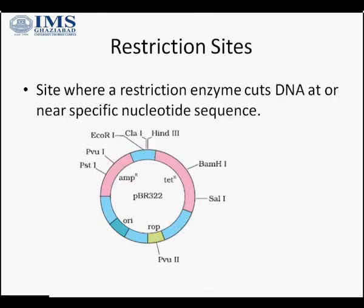The next feature is restriction sites. Restriction sites are sites where a restriction enzyme cuts the DNA at a specific nucleotide sequence. This figure shows the major restriction sites used in recombinant DNA technology, such as HindIII, BamHI, SalI, PstI, PvuI, and EcoRI. These are the sites where a restriction enzyme cuts and helps in the insertion of the DNA fragment at that site.